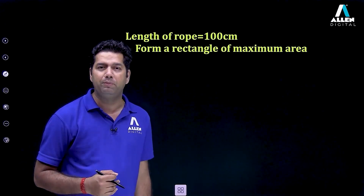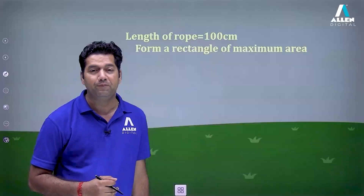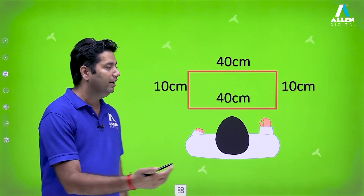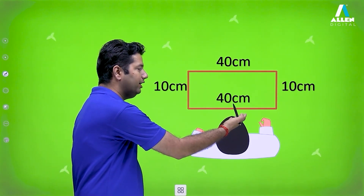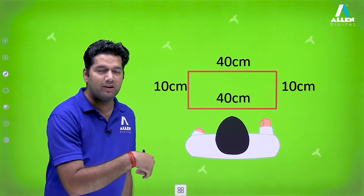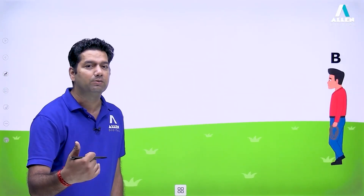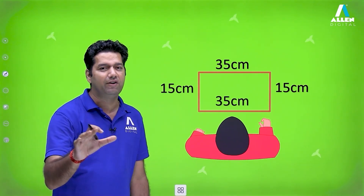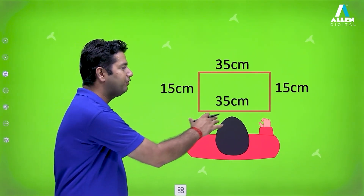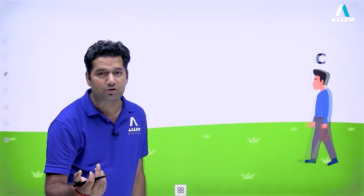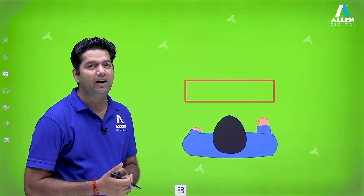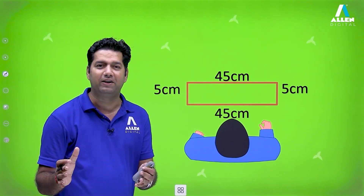This task is allotted to three persons. The first one comes and forms a rectangle with dimensions 40 and 10 — length equal to 40 and breadth equal to 10. The second comes and forms a rectangle with dimensions 35 centimeter and 15 centimeter. Then the third one comes and forms a rectangle with dimensions 45 and 5 centimeters respectively.